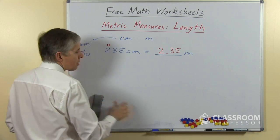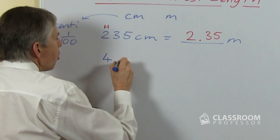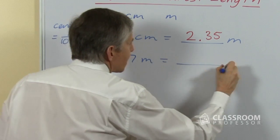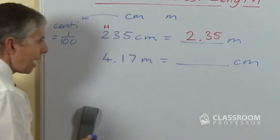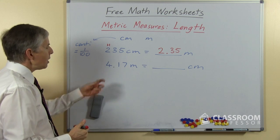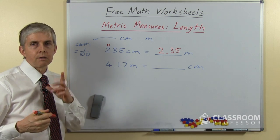Let's look at one going the other way. So supposing we had 4.17 meters, this is a little bit harder. How would we change that to centimeters? Well, here we have some meters. How many centimeters in 1 meter? Of course it's 100.